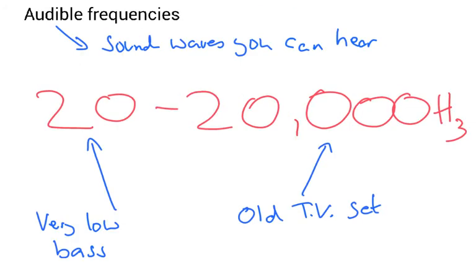One thing you need to know about audible frequencies that human beings can hear: there aren't many facts Cambridge expects you to learn, but this is one stated in the syllabus. An audible frequency is sound waves you can hear, and the range a healthy human being can hear is from 20 hertz to 20,000 hertz.